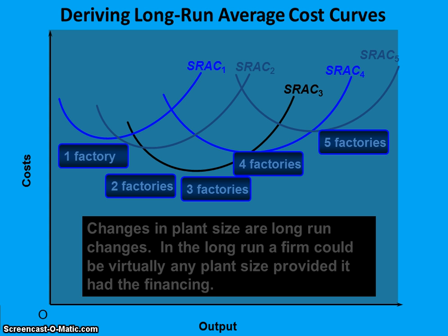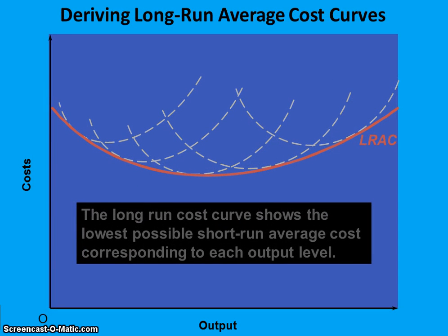Changes in plant size are long-run changes. In the long run a firm could be virtually any plant size — running any number of factories it could finance. If we take those five short-run possibilities and derive the long-run average total cost curve, it shows the lowest possible short-run average cost corresponding to each output level. You look at each output level, determine the best case scenario, and that point is used for the long-run average total cost curve.